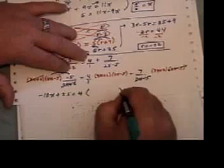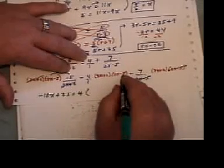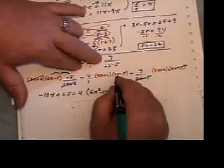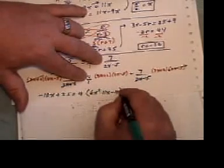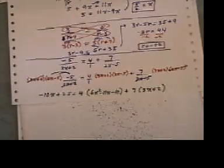I still have 4 multiplied by that bracket, and that gives me 6x squared, negative 15x plus 4x is negative 11x, and negative 10. And 7 times 3x plus 2.